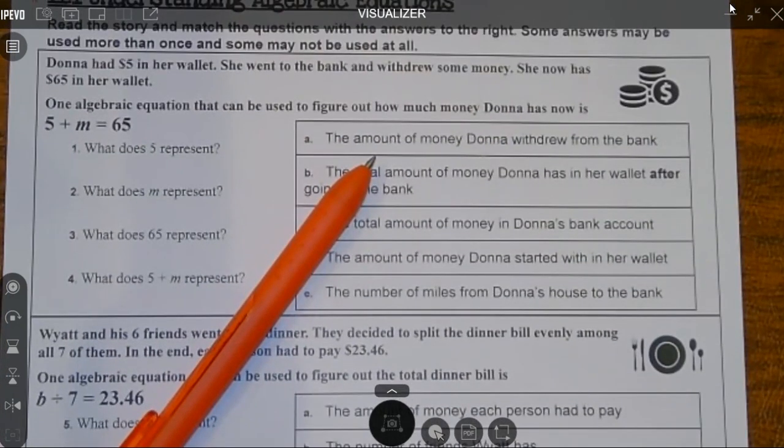It says Donna had five dollars in her wallet. She went to the bank and withdrew some money. So first off, what does the word withdrew mean? Yeah, she took some money out. She now has 65 in her wallet.